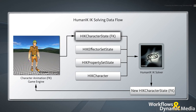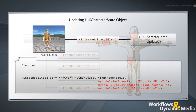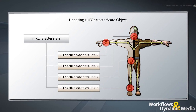First, you must retrieve your character's current FK pose from the game engine as a starting point, and use it to update the HIKCharacterState object. A common method for doing this is to call the HIKSetNodeStateTQSFV function for each node in the HIKCharacterState with the following arguments: two pointers — one to the HIKCharacter and another to HIKCharacterState; the node ID of the desired node whose position and rotation you are retrieving; and three separate arrays of four floating point numbers representing the translation, quaternion rotation, and scale values of the current node in global space.